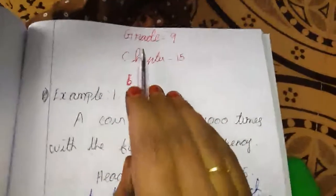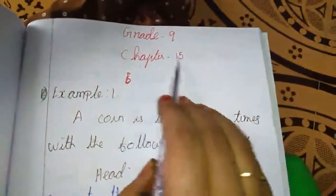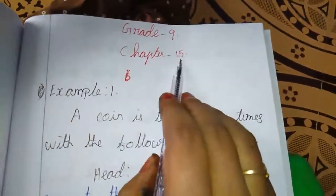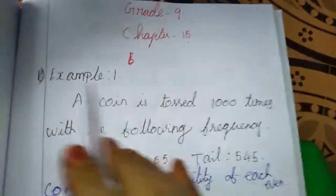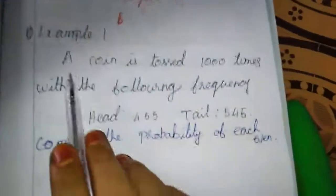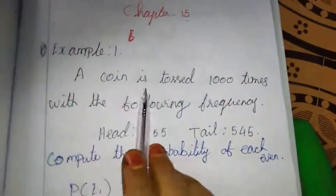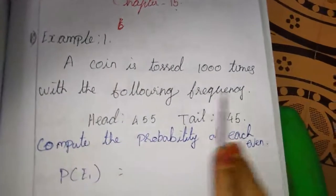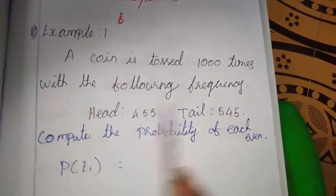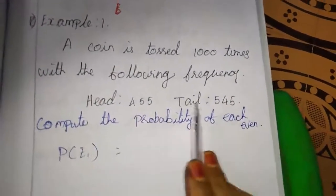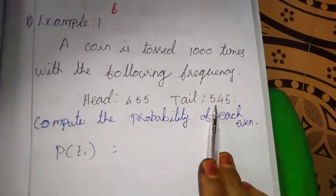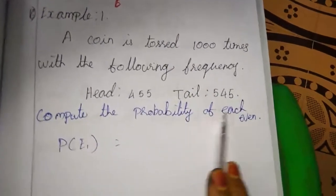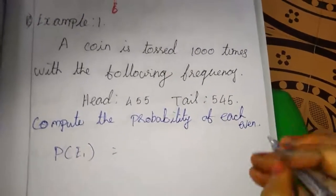Hi dears, now exercise chapter 15. This is the new exercise. The 15th chapter name is Probability. Example 1, see the question: a coin is tossed 1000 times with the following frequency — head 455, tail 545. Compute the probability of each event.